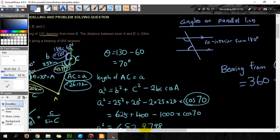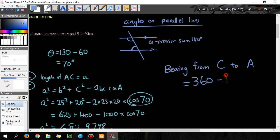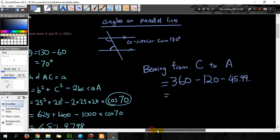So minus 120 minus 45.99 and whatever it is after that, don't round till you get the final answer. And the answer is 194 degrees, rounded to the nearest whole number.